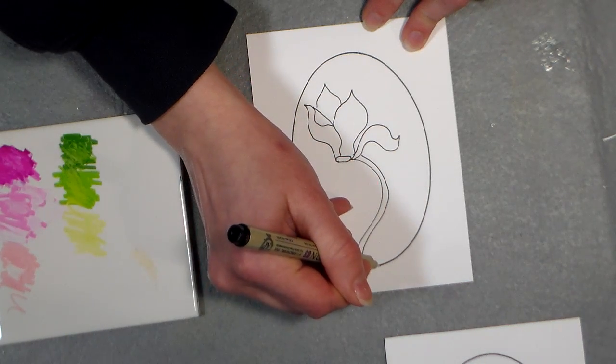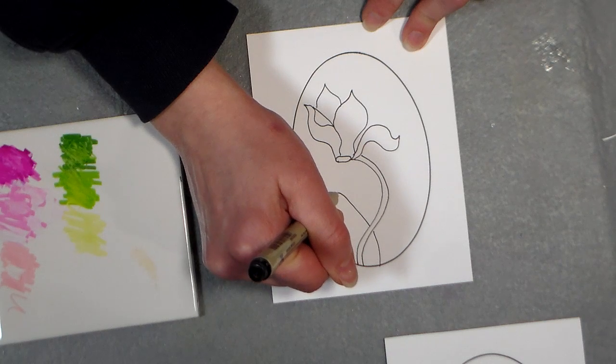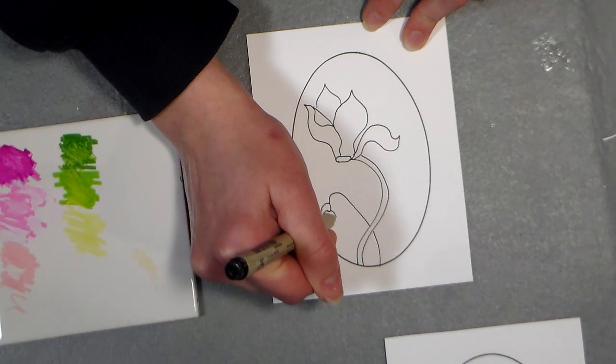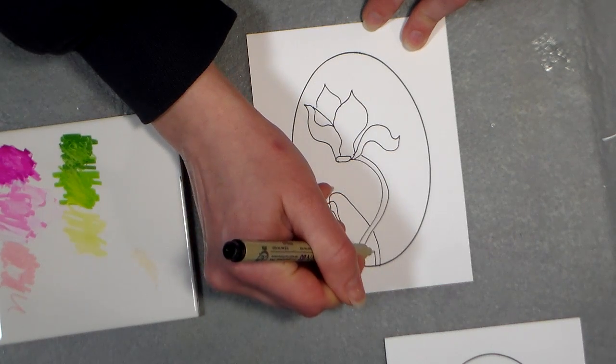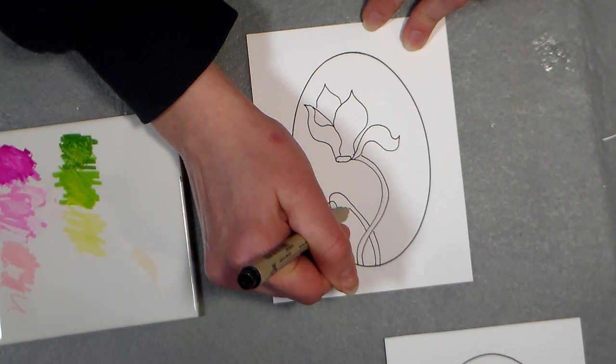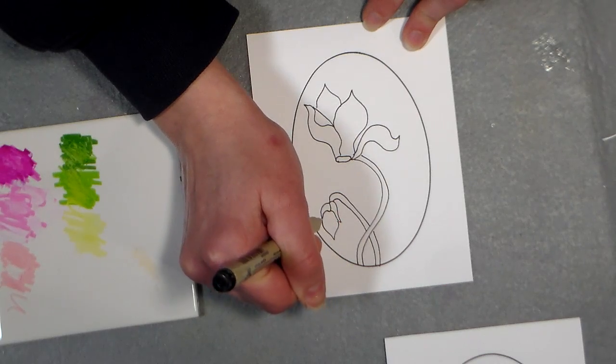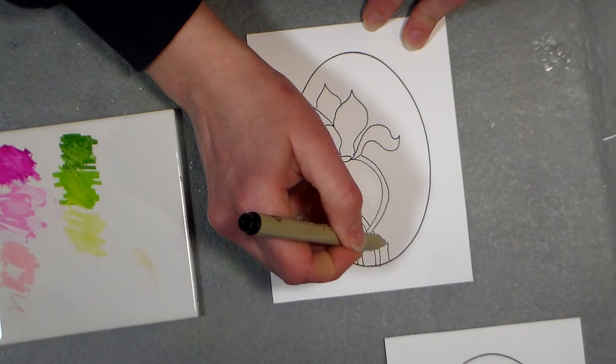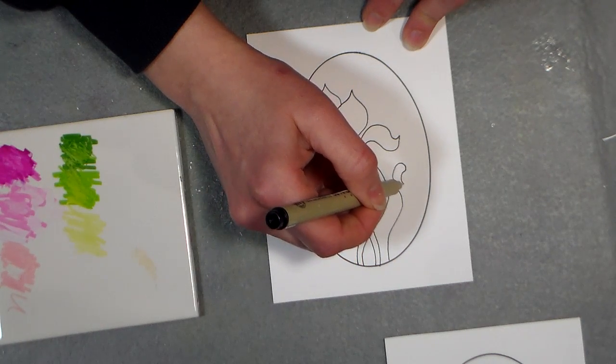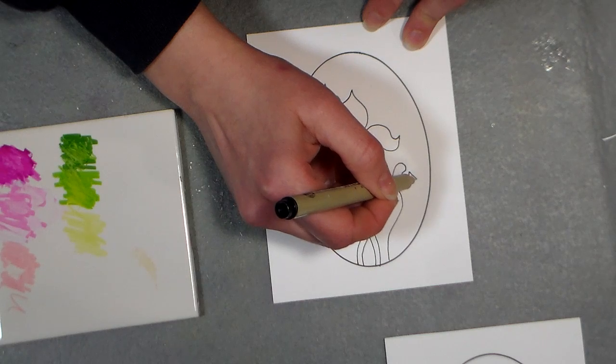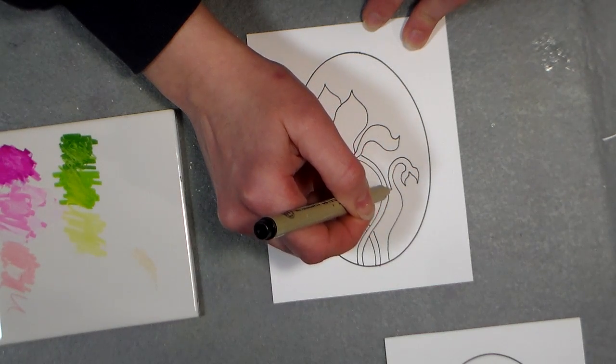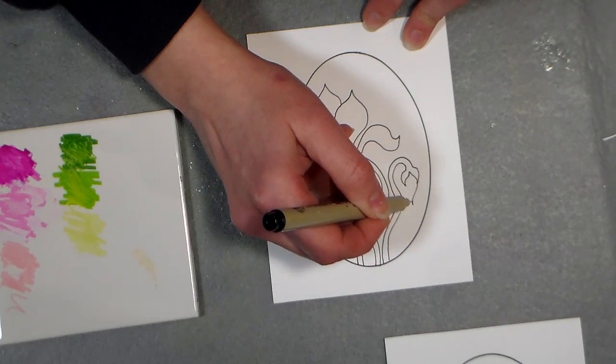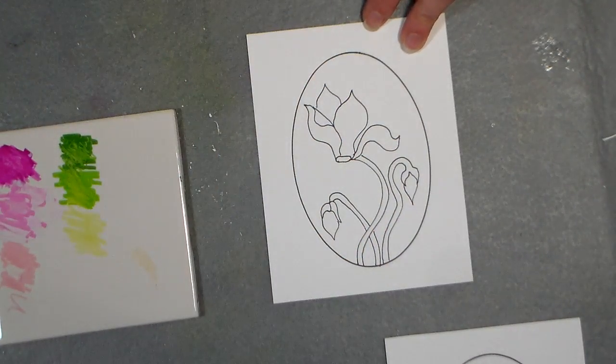I'm going to put in a couple buds with leaves, doubling up that stem so that we have room to color. It's just like a little teardrop shape. I'm going to do another one over here, just trying to keep my lines as smooth as I can.